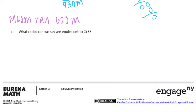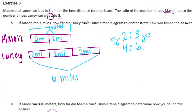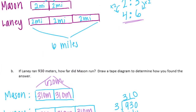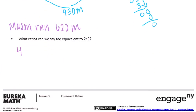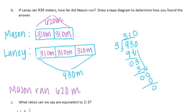Part C: what ratios are equivalent to two to three? From part A we found four to six is equivalent, and from part B we found 620 to 930 is also equivalent to two to three.